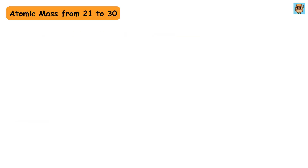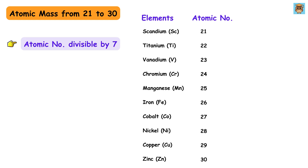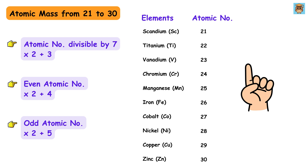Now the trick to find the atomic mass of elements from 21 to 30 is a bit different. Let me write the elements from 21 to 30 along with their atomic number. The trick is as follows: first check if the atomic number is divisible by 7 — if it is, multiply the atomic number by 2 and add 3. If not, check if the atomic number is even — if so, multiply by 2 and add 4. For an odd atomic number, multiply by 2 and add 5. There is only one exception, which is zinc.